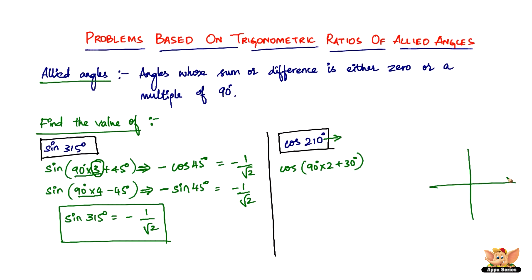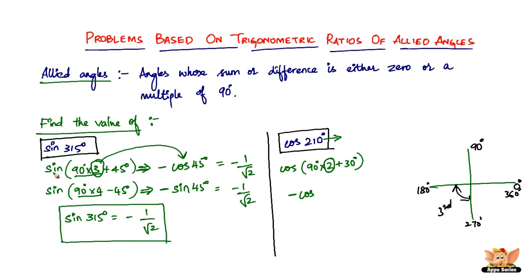210 degrees lies between 180 and 270, so it's in the third quadrant — where tan is positive and cosine is negative. Since the multiple of 90 is even (2), cosine remains cosine and does not change to sine. So we get minus cosine 30 degrees. Cosine 30 degrees is root 3 by 2, therefore cos 210 degrees equals minus root 3 by 2.